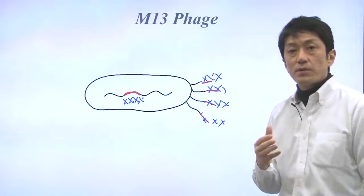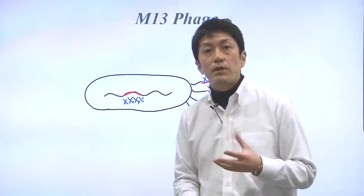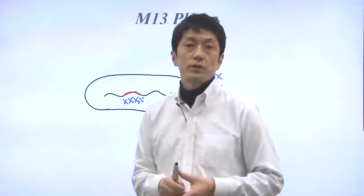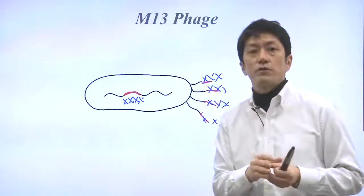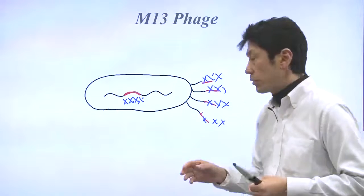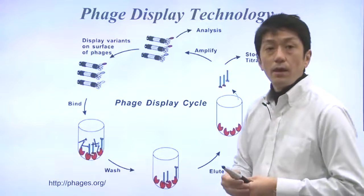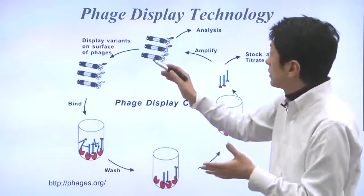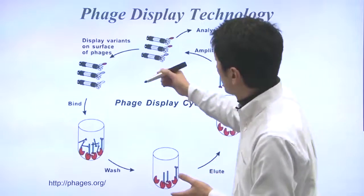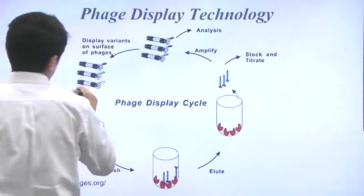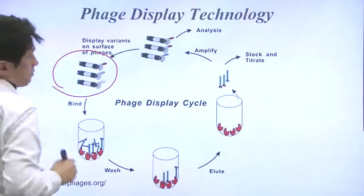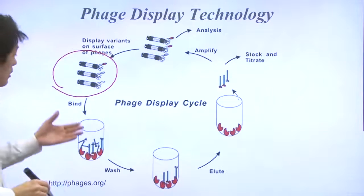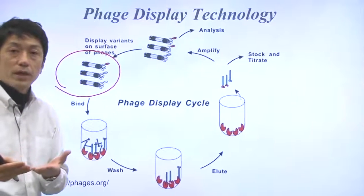The phage display method can be used to identify the peptide that binds to a particular protein or anything. The first step is to cover the surface of a plastic plate with the protein of interest. Next, the phages with the peptides are added. These are the phages — many different kinds of phage, and each one of them presents one peptide.